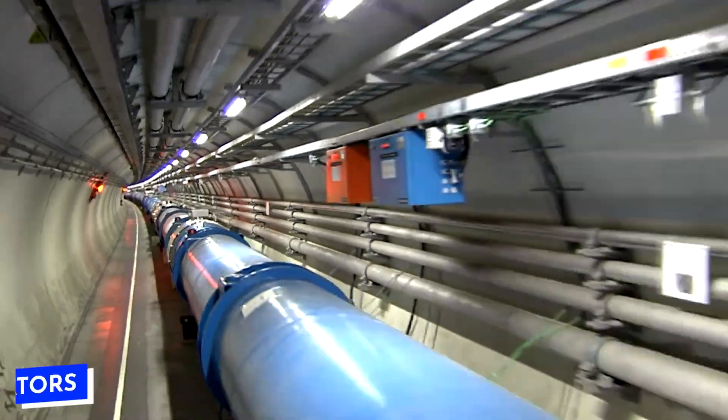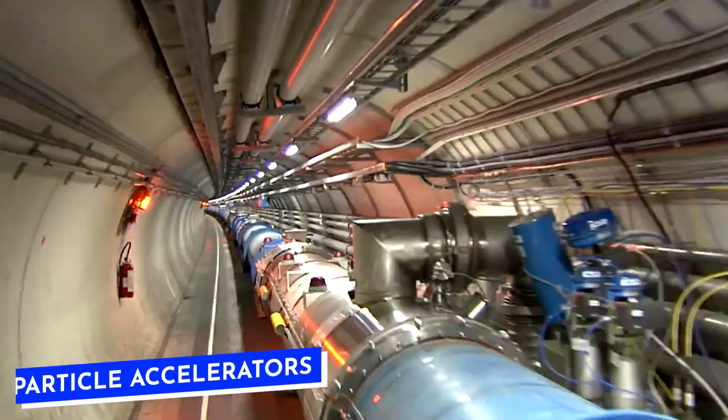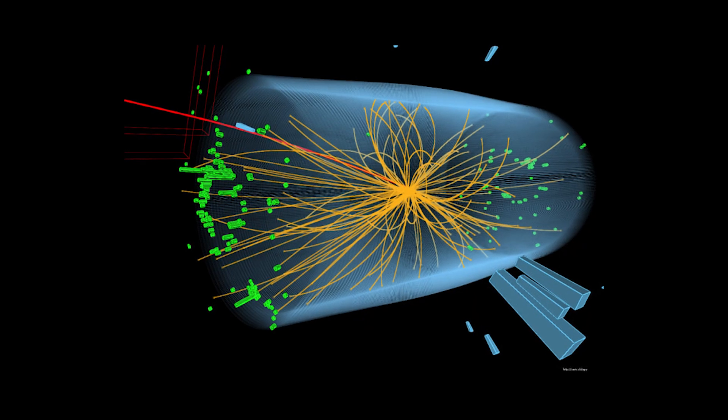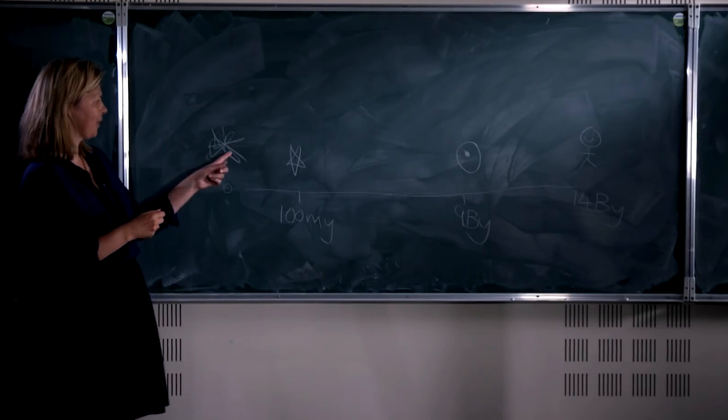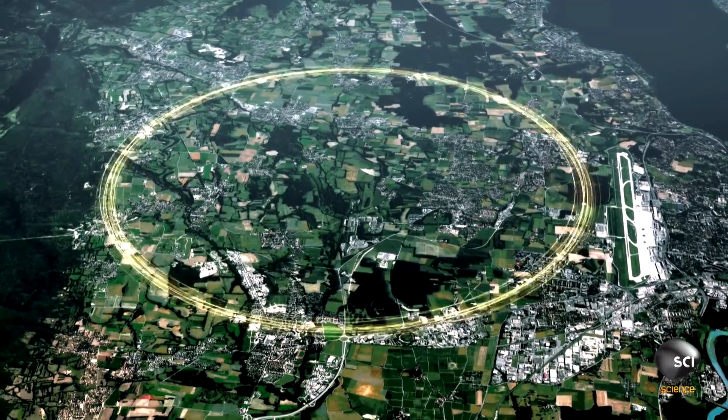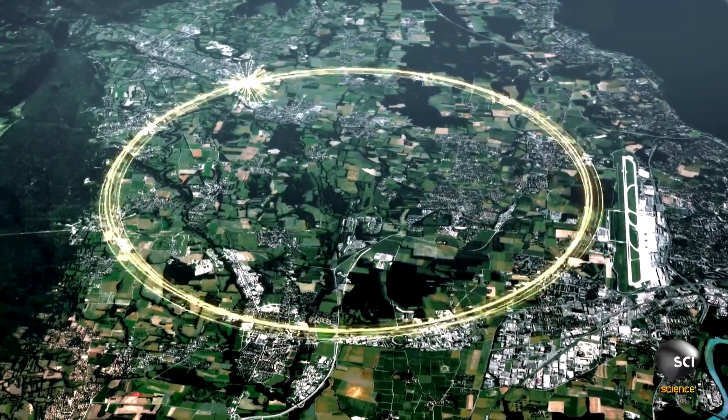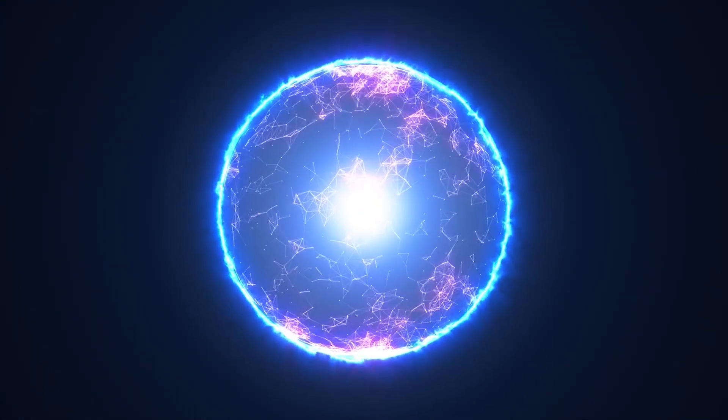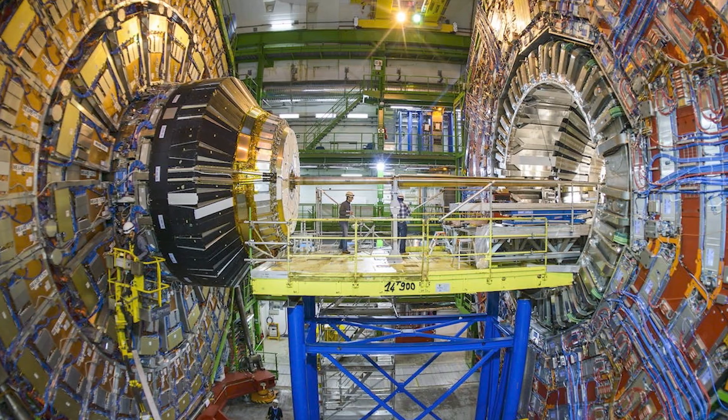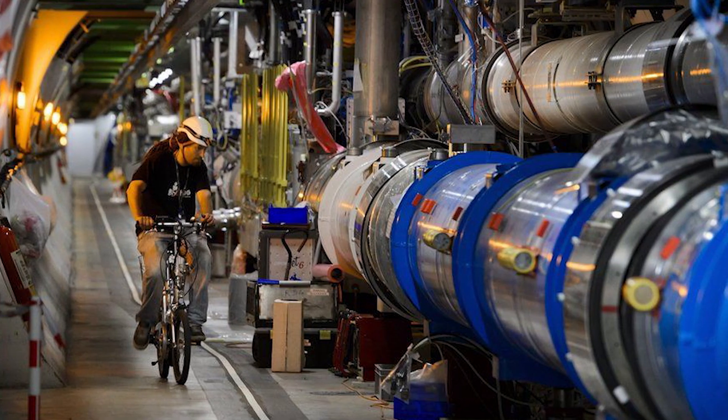And there's more. Particle accelerators, those massive machines scientists use to smash tiny particles together, also depend on relativity. When particles zoom around at speeds close to the speed of light, their mass increases, just as relativity predicts. Understanding this helps scientists in controlling and studying these particles.